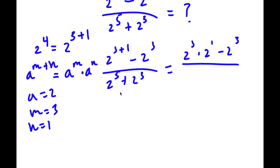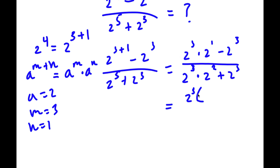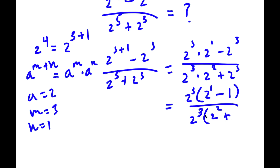Now I'm going to do the same thing with 2 to the power of 5, rewriting it as 2 to the power of 3 times 2 squared. So now I have 2 to the power of 3 times 2 to the power of 1 minus 2 to the power of 3, all over 2 to the power of 3 times 2 squared plus 2 to the power of 3. Now because we have so many terms with 2 to the power of 3, I'm going to factor out 2 to the power of 3 from the entire expression. In the numerator, 2 to the power of 3 times 2 to the power of 1 divided by 2 to the power of 3 is simply 2 to the power of 1, and 2 to the power of 3 divided by 2 to the power of 3 is 1. In the denominator, factoring out 2 to the power of 3 gives 2 squared plus 1.